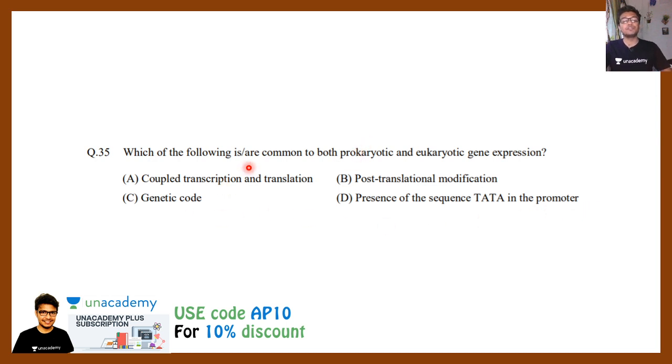Coupled transcription and translation is possible in prokaryotes but it is not possible in eukaryotes, because in eukaryotes mRNA is processed in the nucleus, exported outside, and it engages with the ribosome on the ER. Two separate segments, and the translation and transcription happen in two different segments. So that is why this option A cannot be correct.